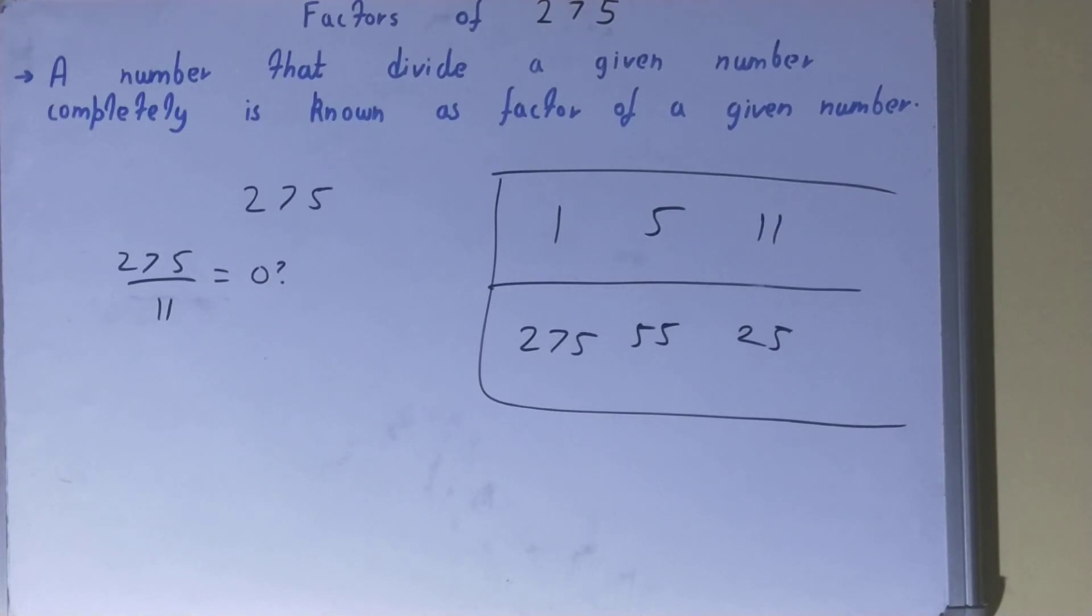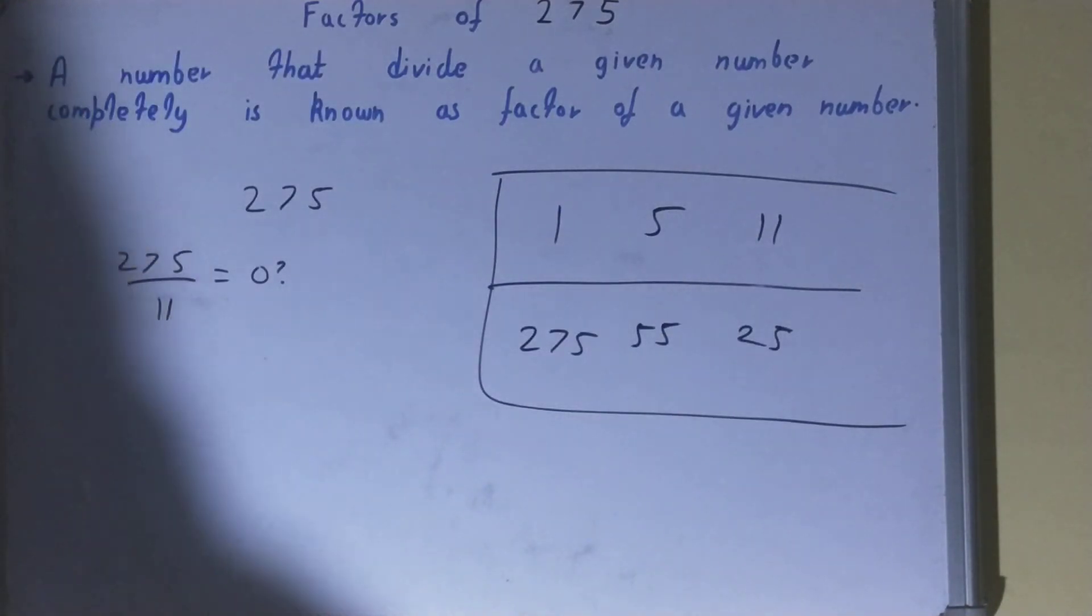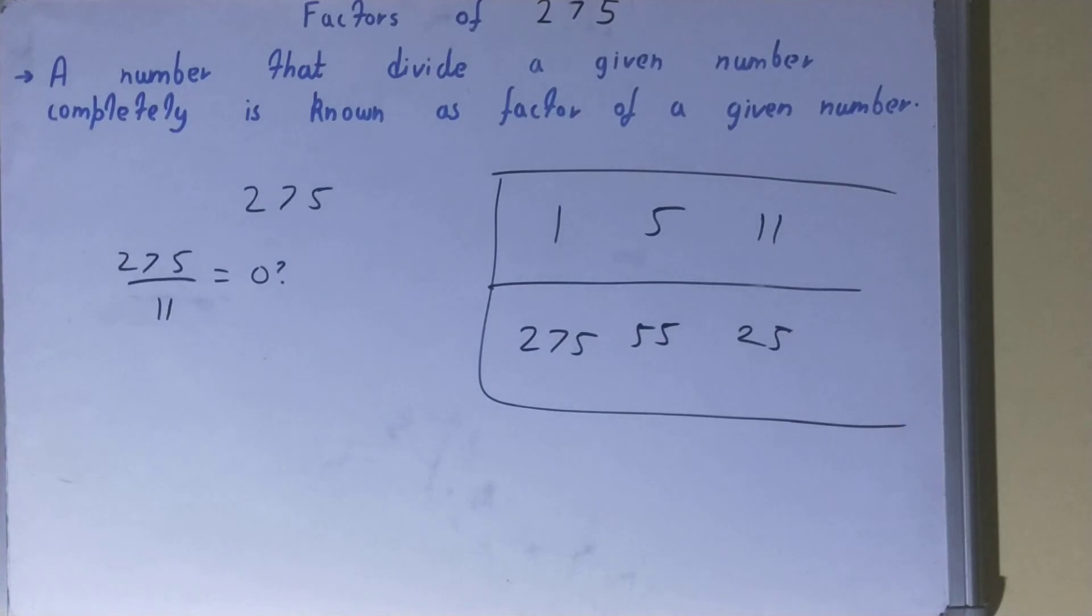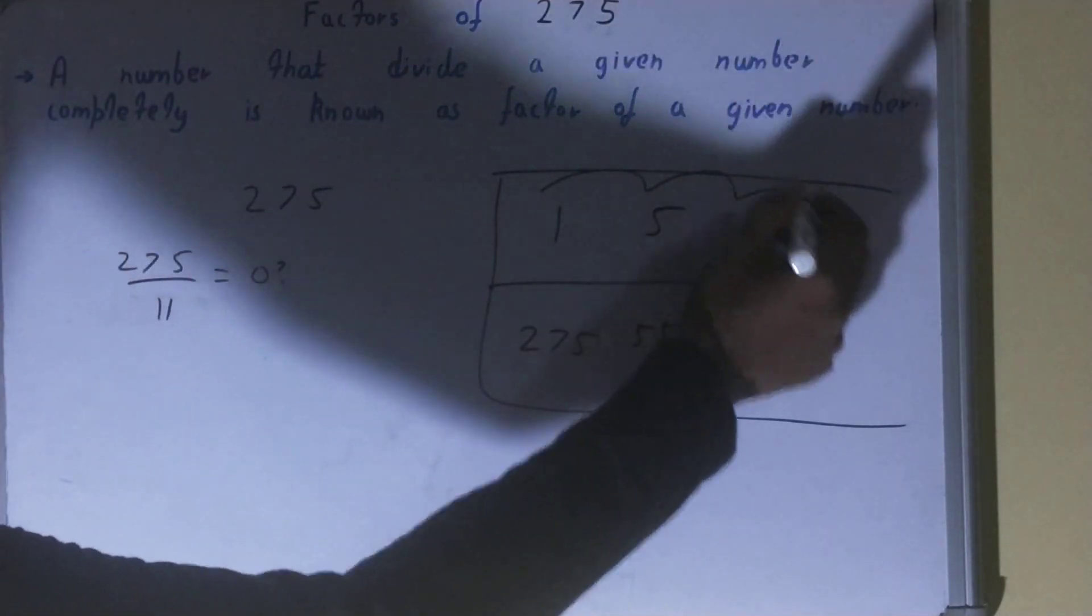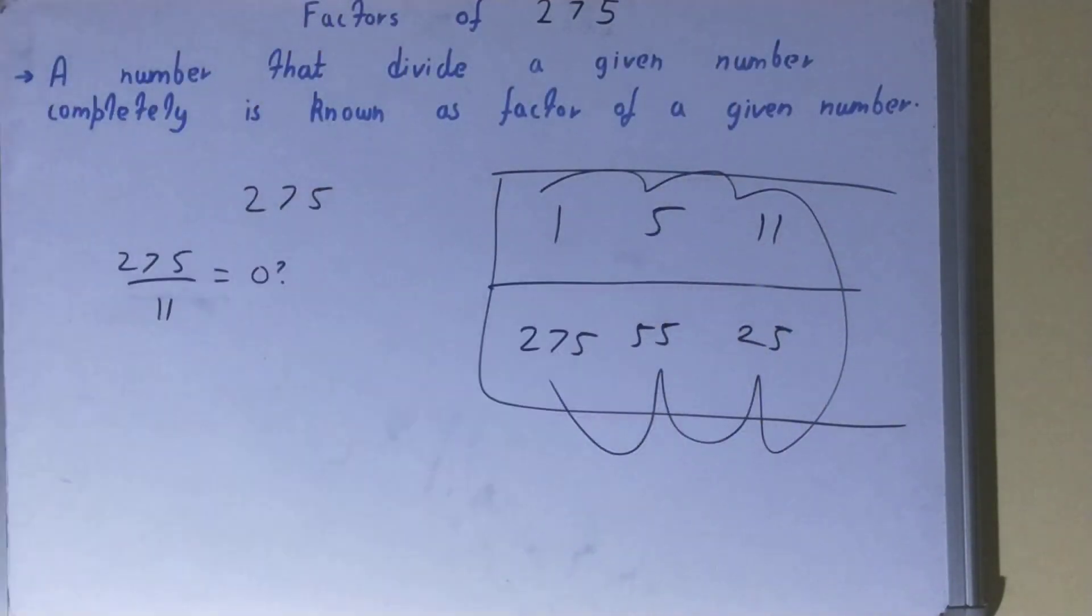Now one thing you need to see very carefully: in the second row, in the last row, you have got a number as 25. Now even after this if you check you will not get more. So the factors for the number 275 will be 1, 5, 11, 25, 55, and 275. So this was all about factors of the number 275.